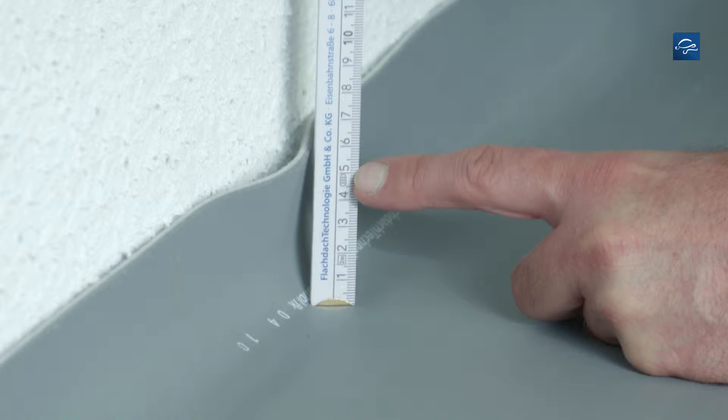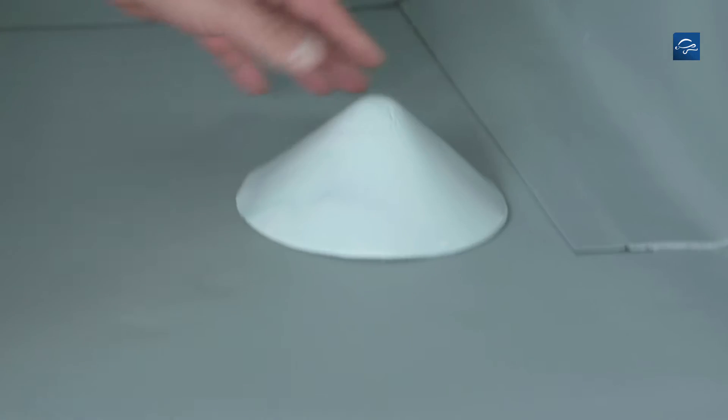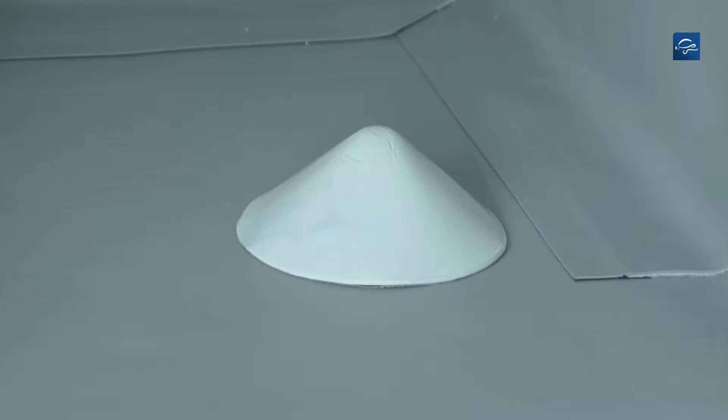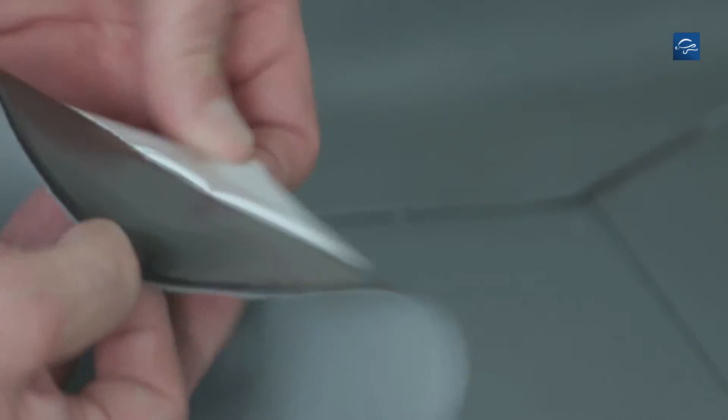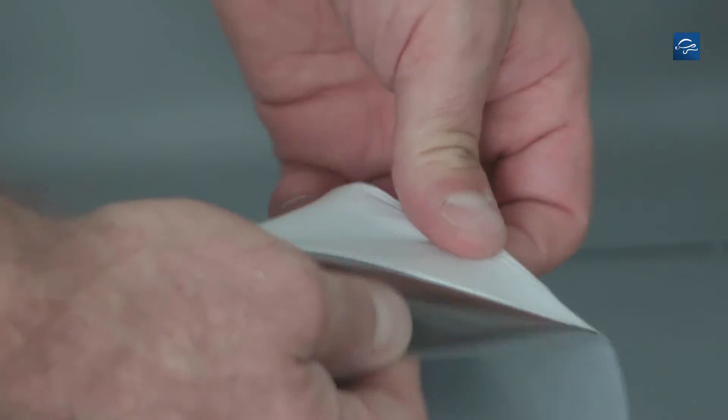Now we will deal with the internal corner which is carried out using a preformed detail. Clean the working area with solvent welding agent, remove the release film from the preformed detail and position the internal corner.